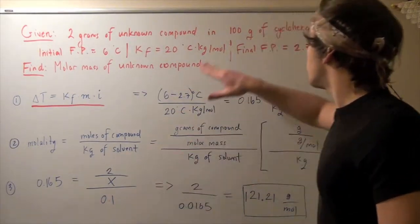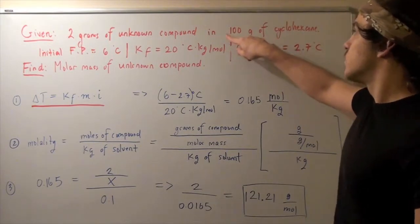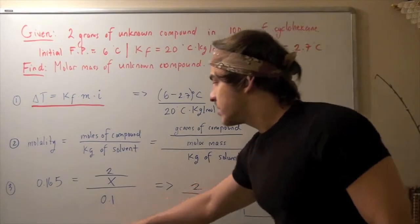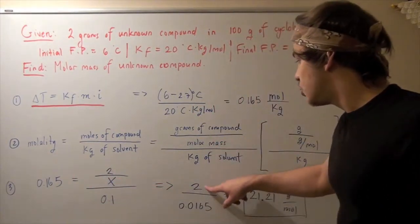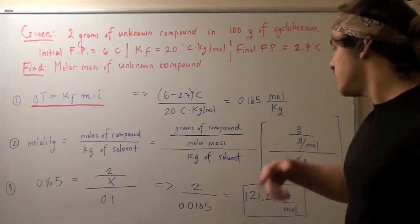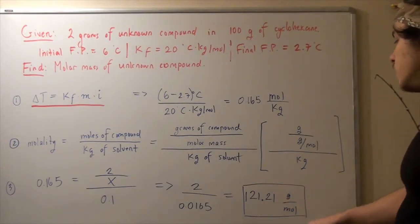0.1 comes from 100 grams. Remember, we want to deal with kilograms of our solvent. And we're given 100 grams. So, divide this by 1,000, we get 0.1 kilograms. Bring this over, multiply this out, then bring it back, and we get 2 divided by 0.0165 equals x. And so, our x is 121.21 grams per mole. And this is our molar mass.